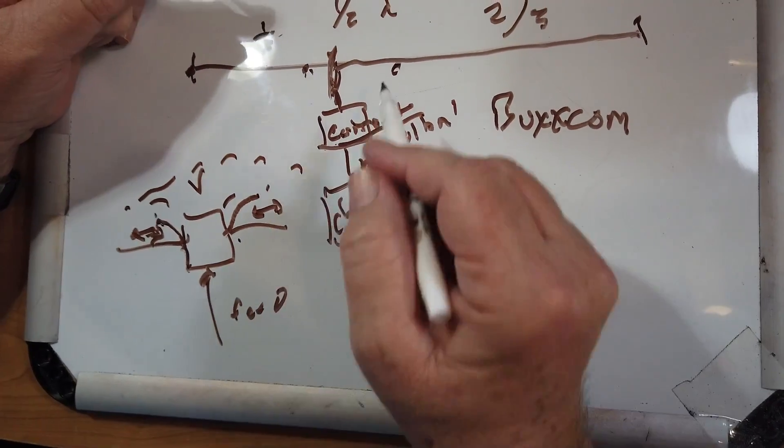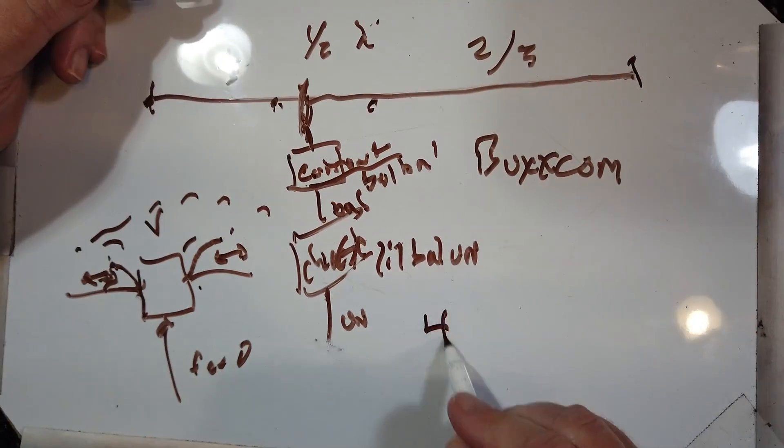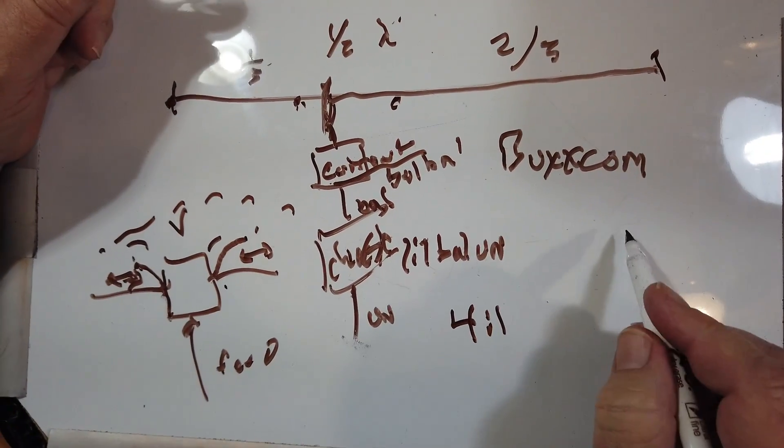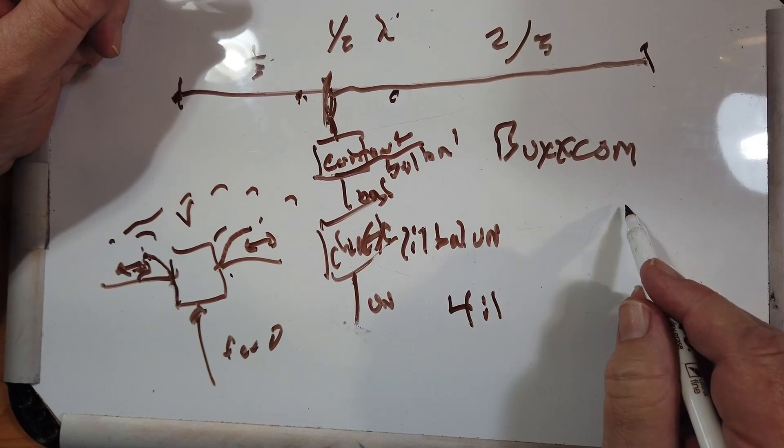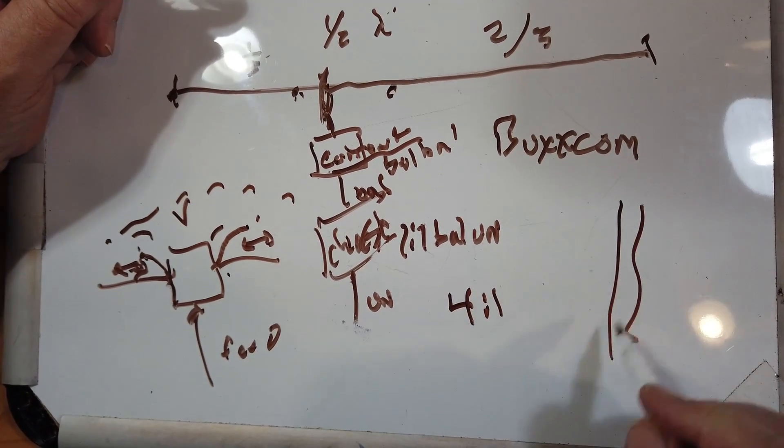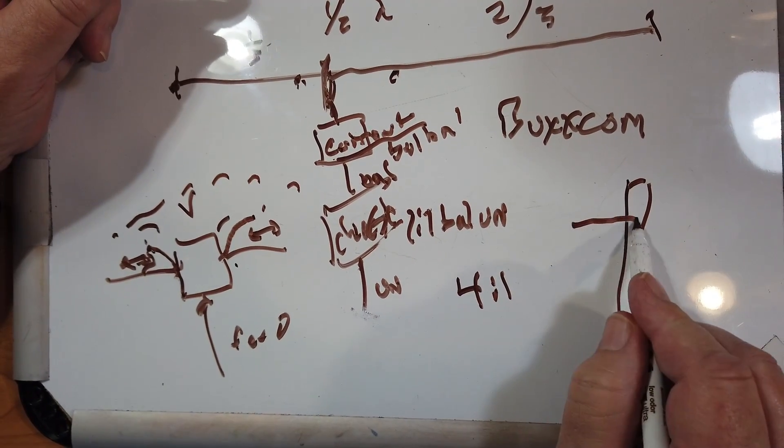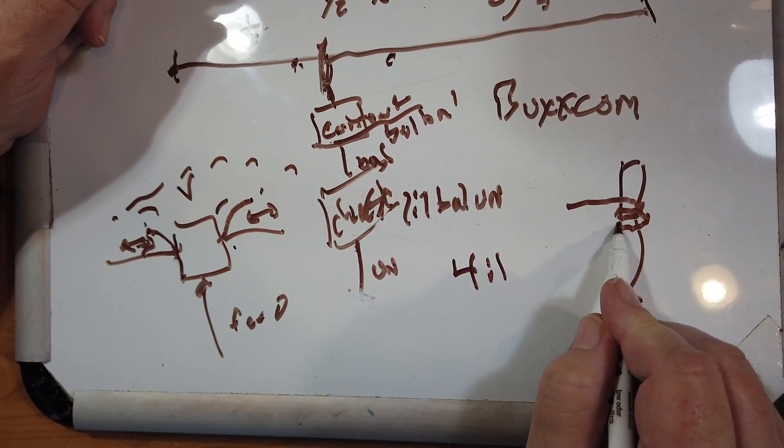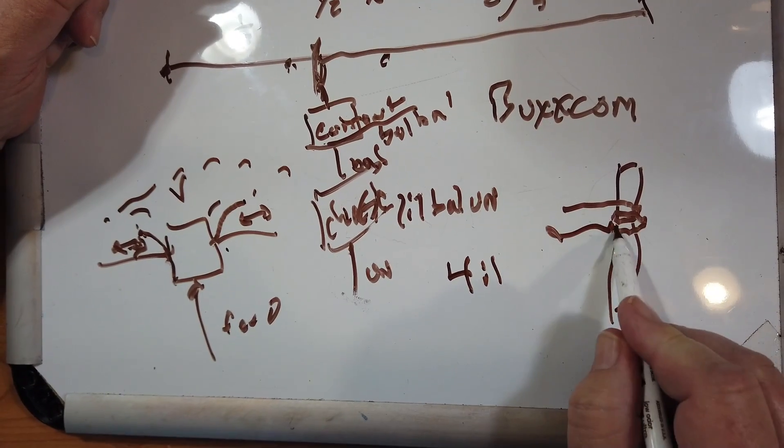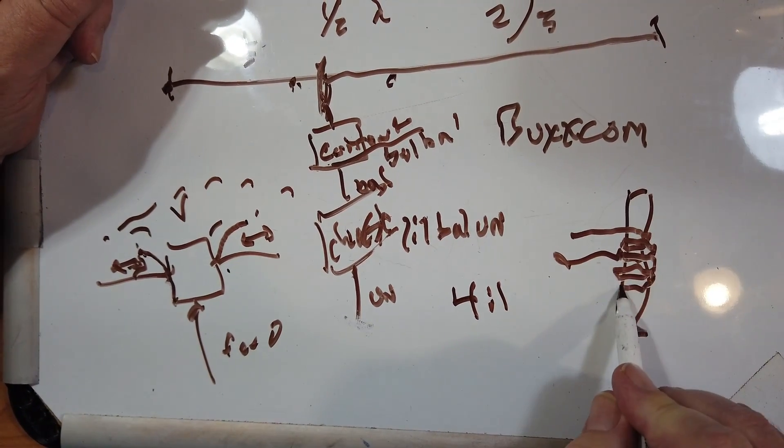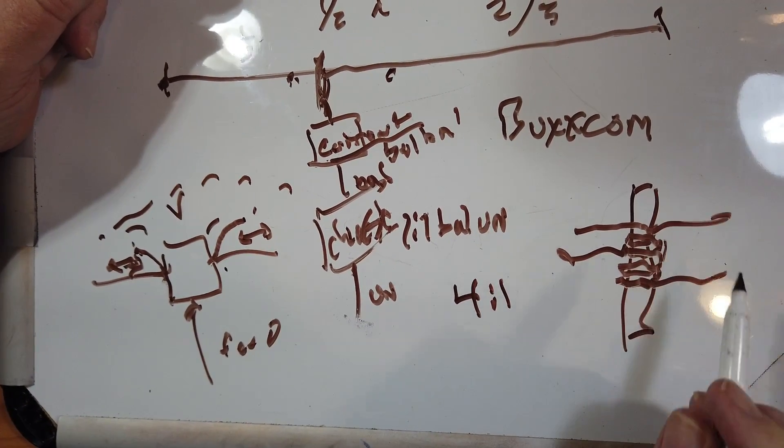Now, these many four-to-one baluns that you buy these days are a coil. It's usually a toroid. And you have one, two, the tap, three, four, a tap, and a tap.